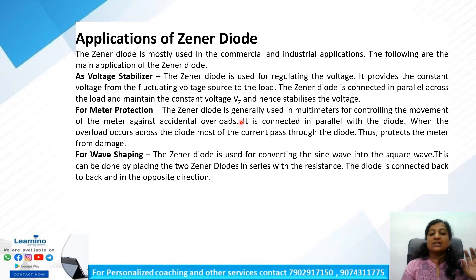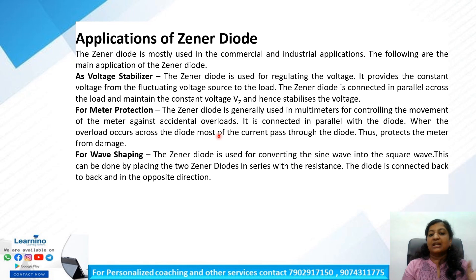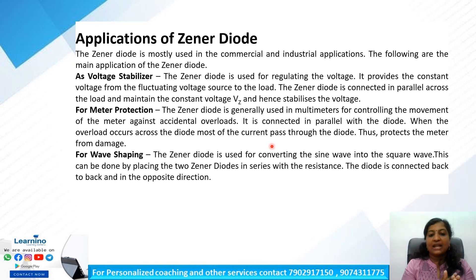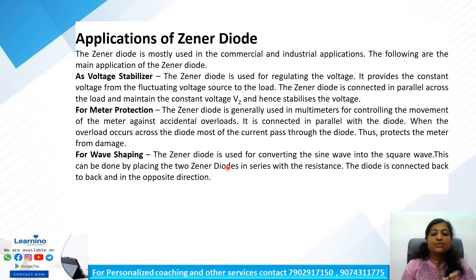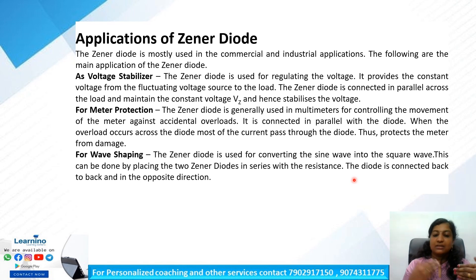The next application is meter protection. The Zener Diode is generally used in multimeters to protect the movement of the meter against accidental overload. It is connected in parallel; when overload occurs, most of the current passes through the diode, protecting the meter. The third application is wave shaping — it converts a sine wave into a square wave by placing two Zener diodes in series with resistance, connected back to back in opposite directions.